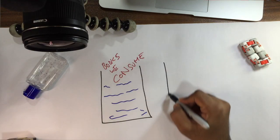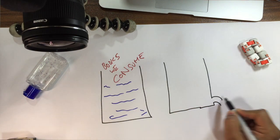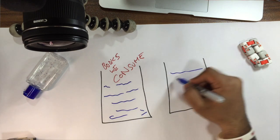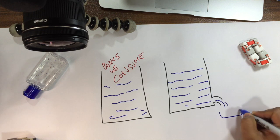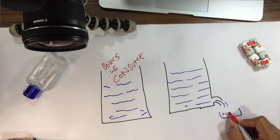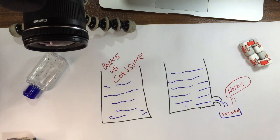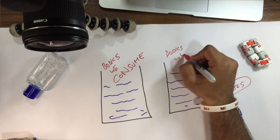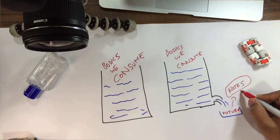When we consume information, we need to make sure that we are using it again in the future. If we are consuming information and taking notes at the same time, those notes represent future uses — we can use them in any way we want. The difference is that we now have a way to use that information again in the future.